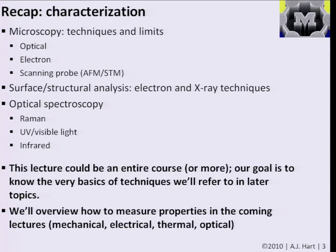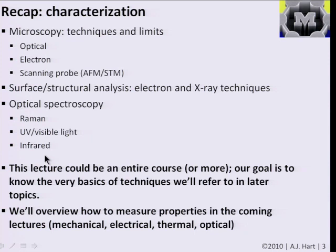Last time we talked about characterization of nanostructures. We mainly focused on microscopy: optical microscopy, electron microscopy, and scanning probe microscopy. The theme is that we want a working knowledge of what these techniques are called, how they operate, and what their capabilities and limitations are. We can use microscopy to characterize materials, surface analysis using electrons and X-rays to get information about surface and chemical structure, and optical spectroscopy.